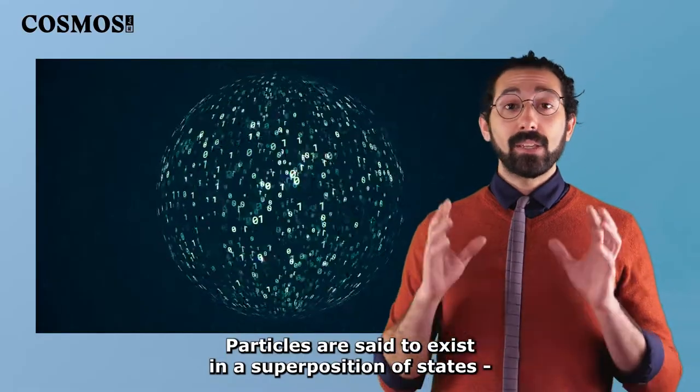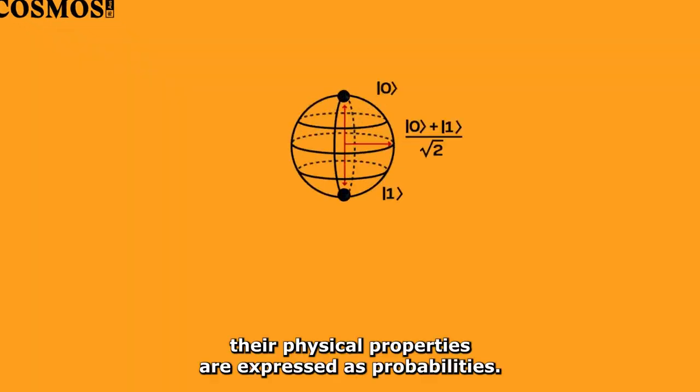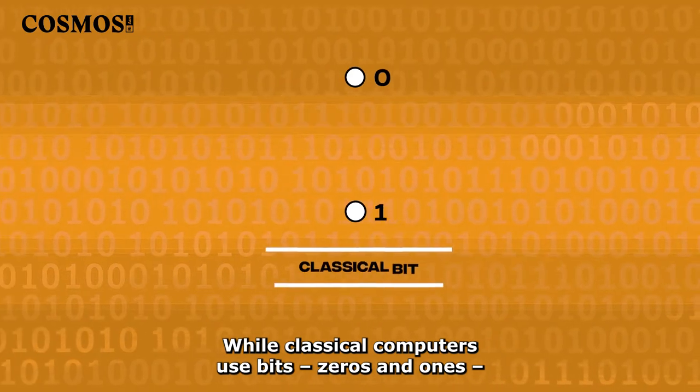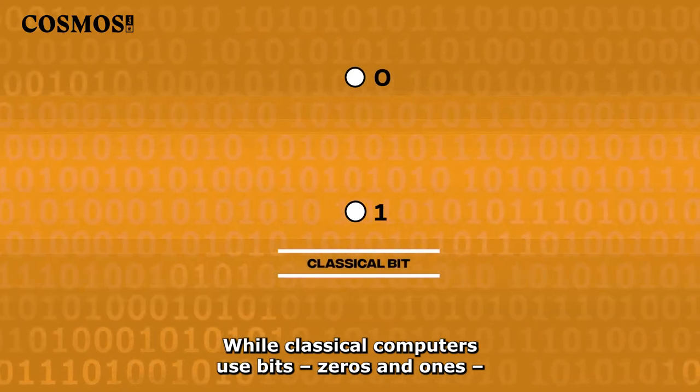Particles are said to exist in a superposition of states. Their physical properties are expressed as probabilities. While classical computers use bits, zeros and ones,